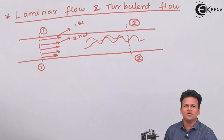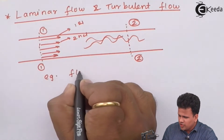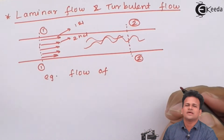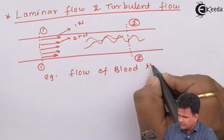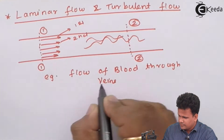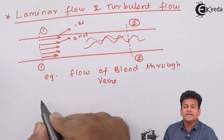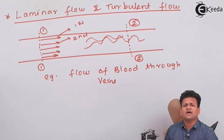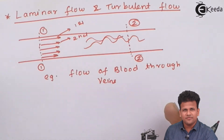A common example of laminar flow is the flow of blood through the veins — this flow is a laminar flow. An example of turbulent flow is flow through a river. If a river is flowing at very high velocity, that flow can be seen as turbulent flow.